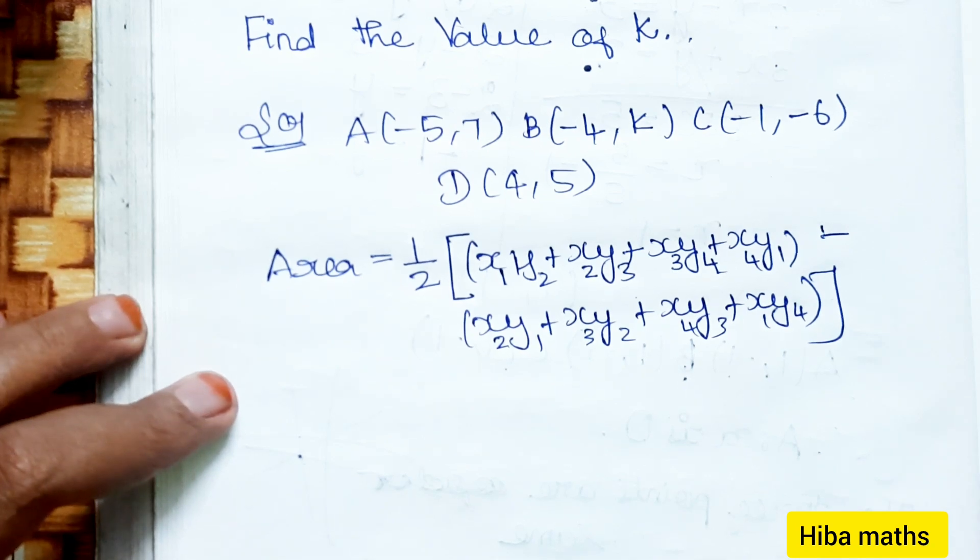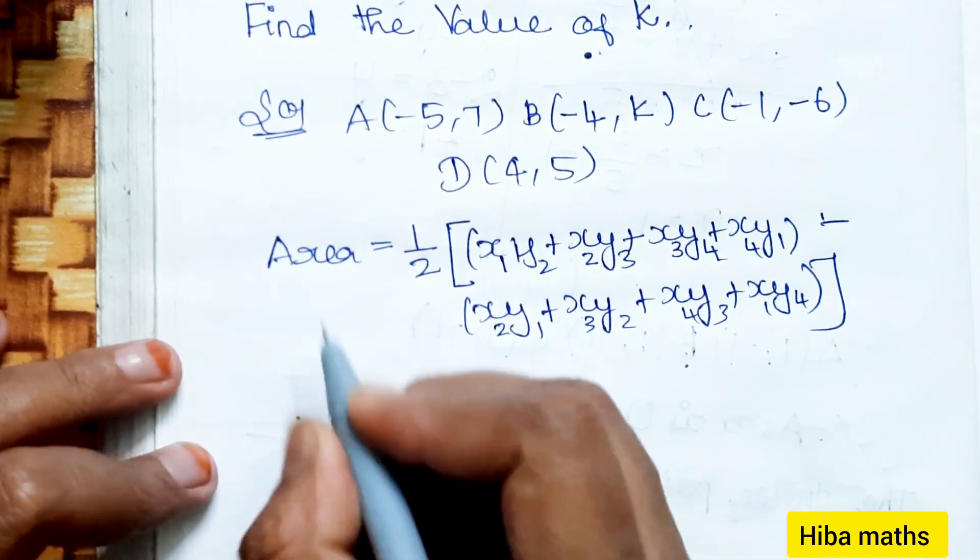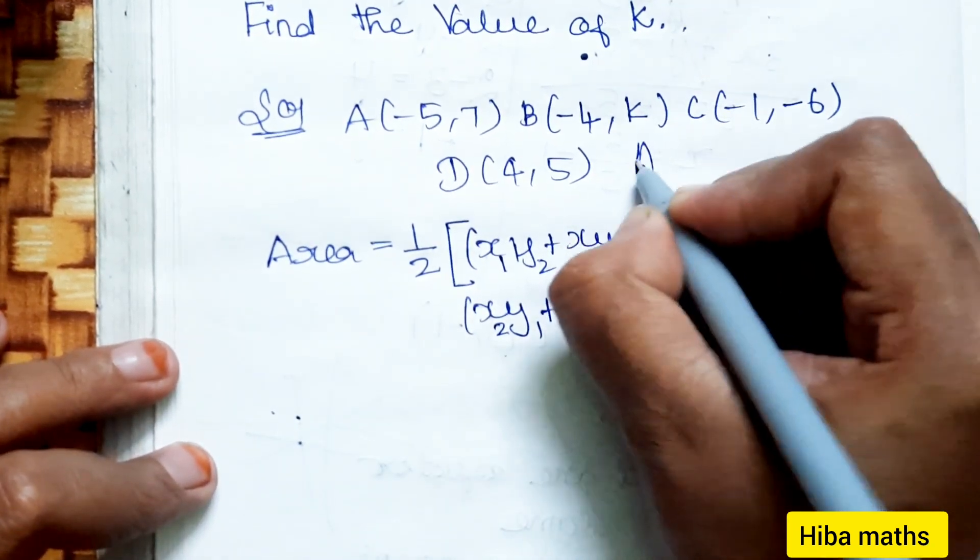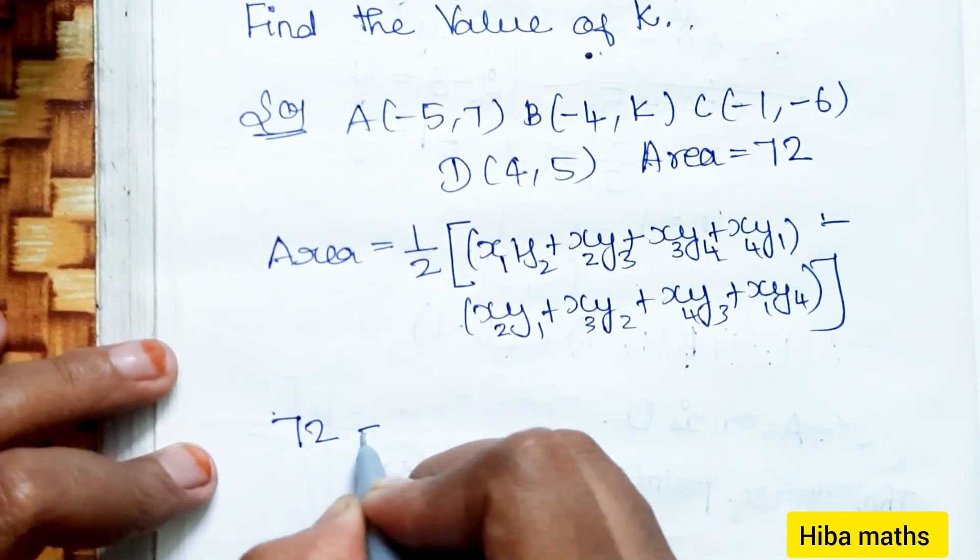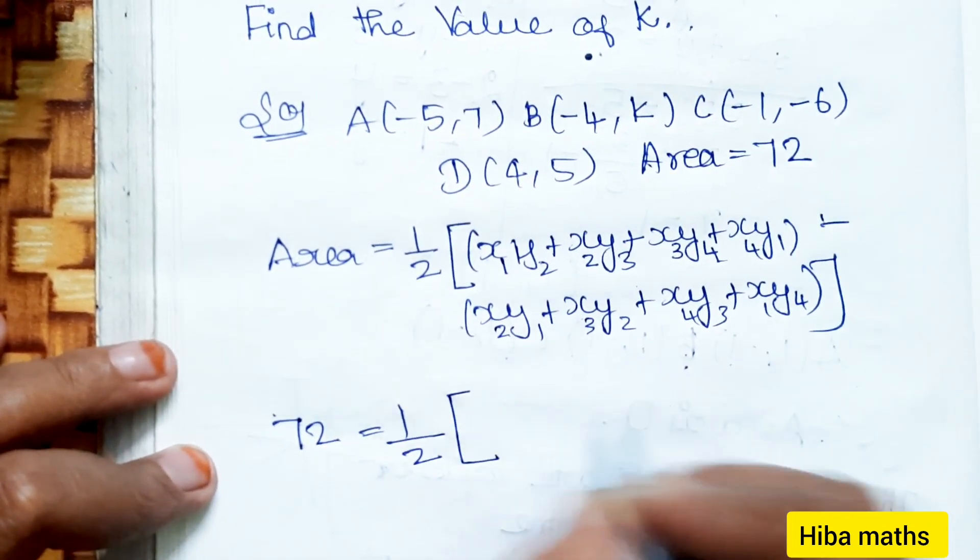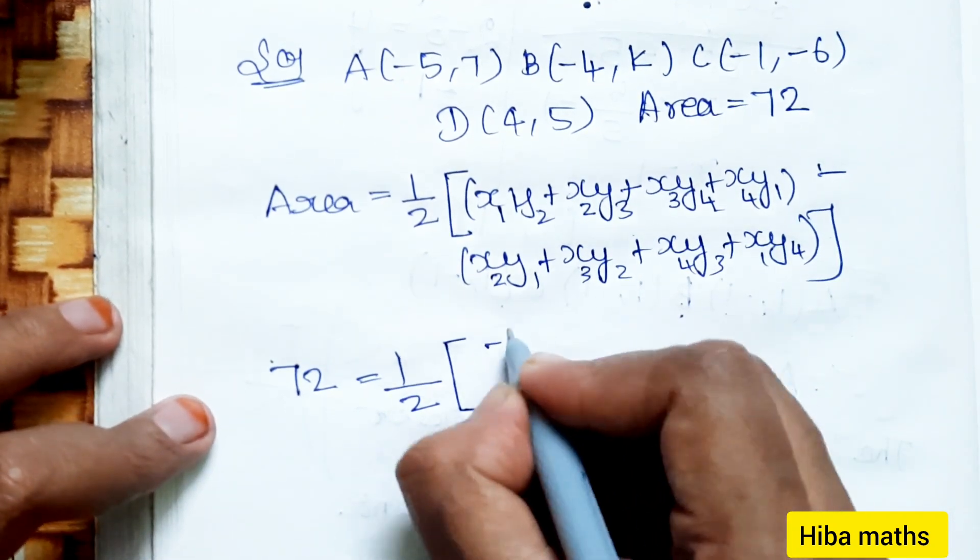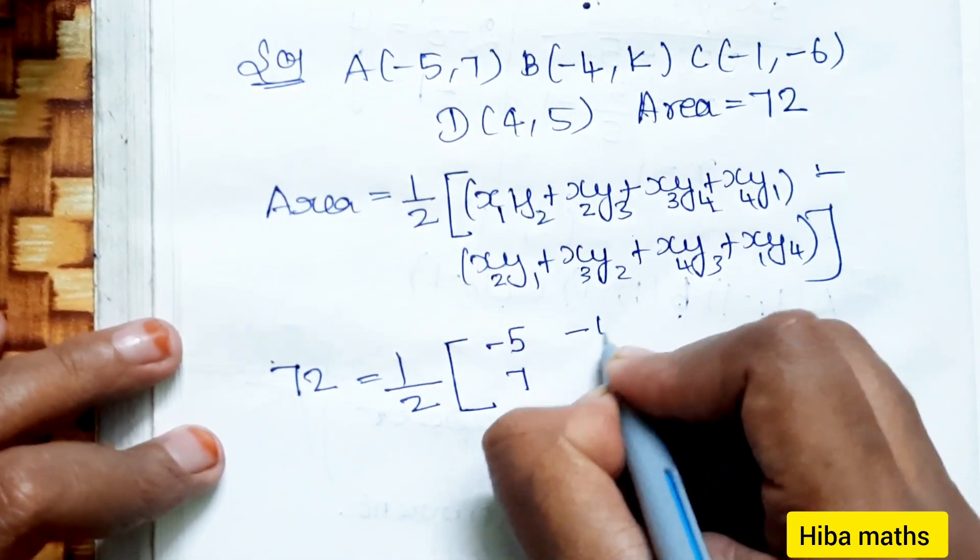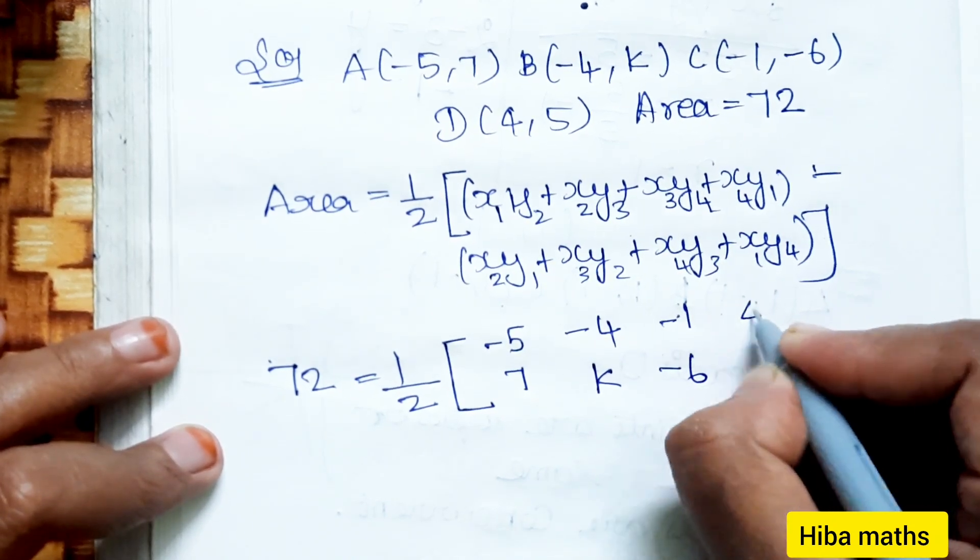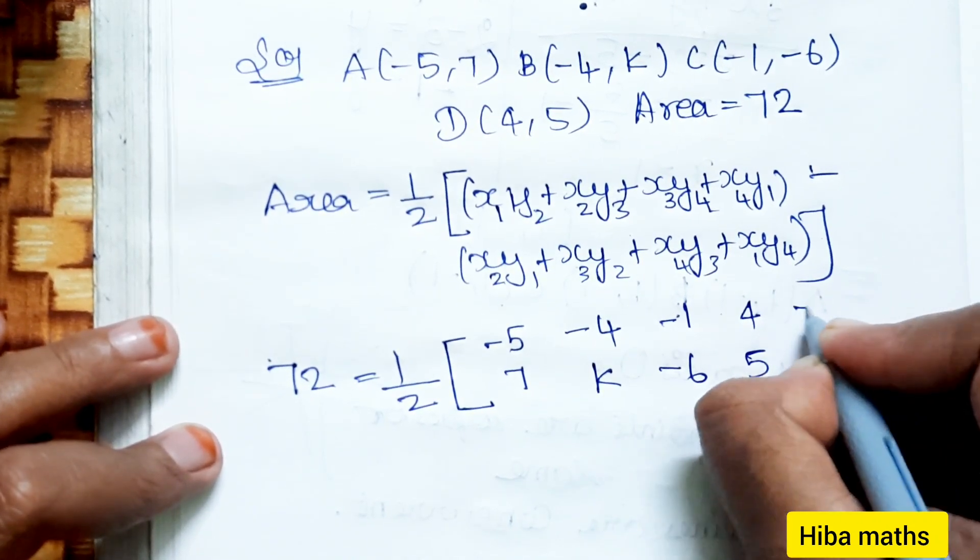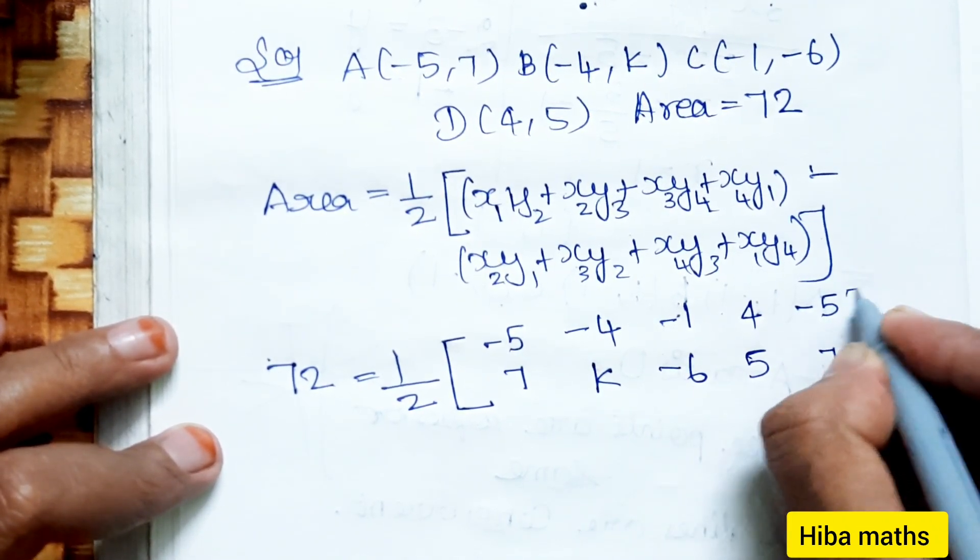If we substitute values, we will get the area 72. So, area of quadrilateral 72 equals 1/2, with points (-5,7), (-4,K), (-1,-6), (4,5), (-5,7).